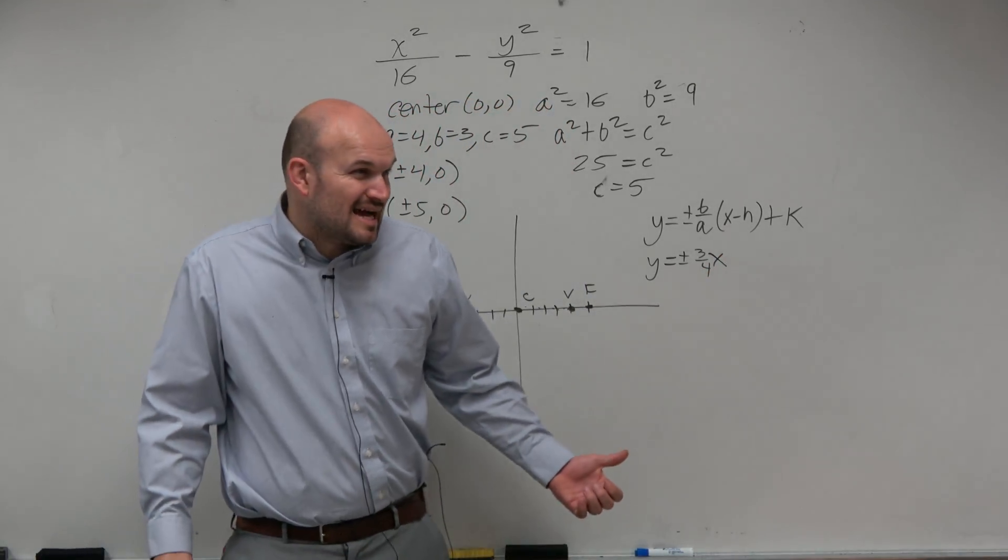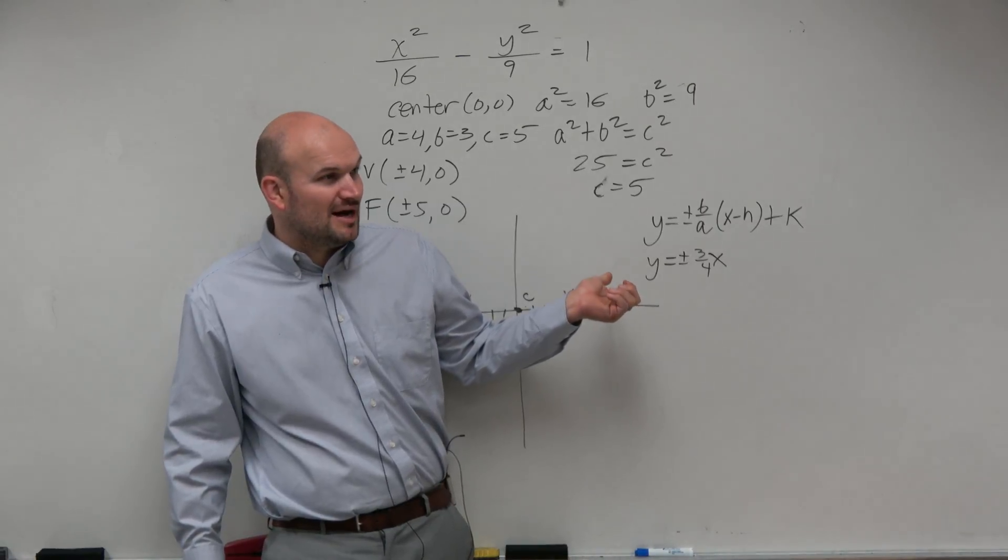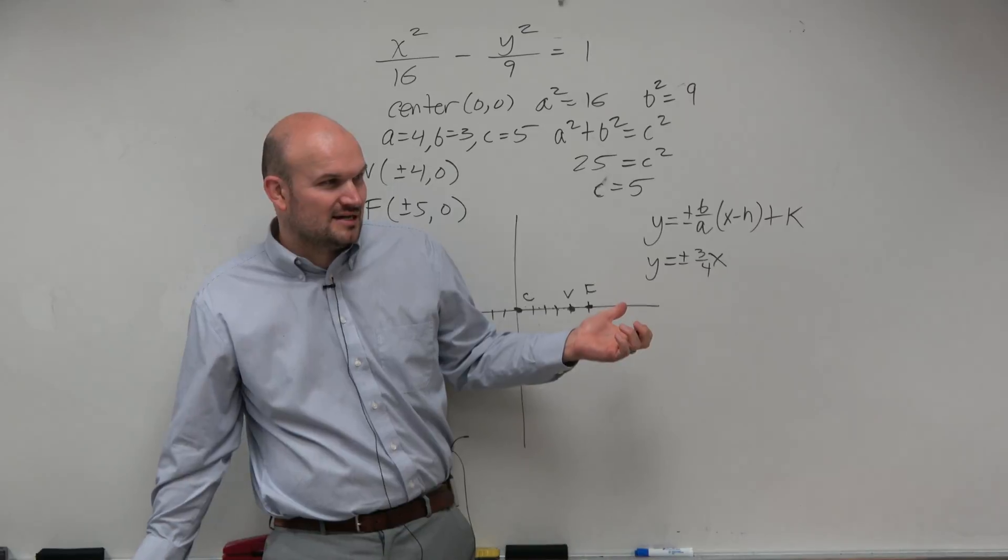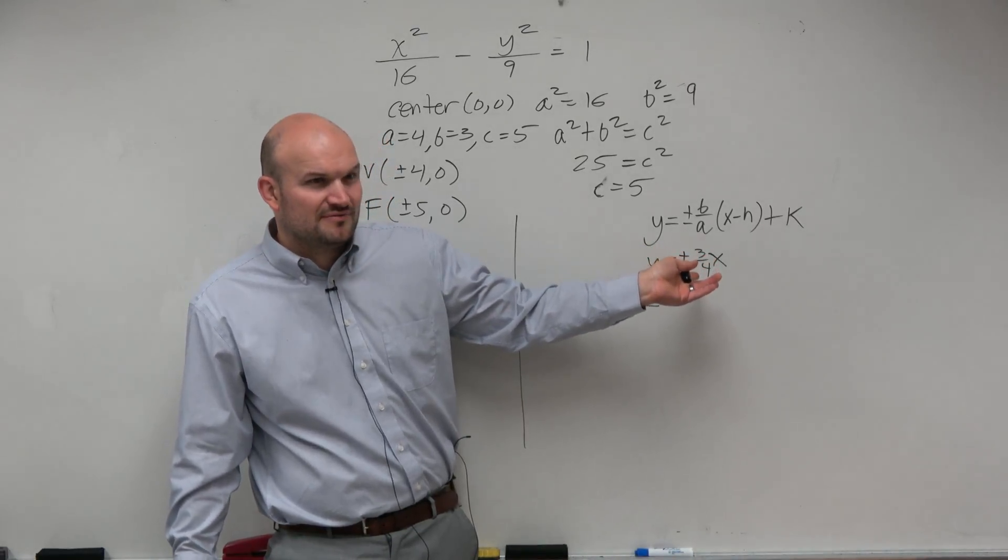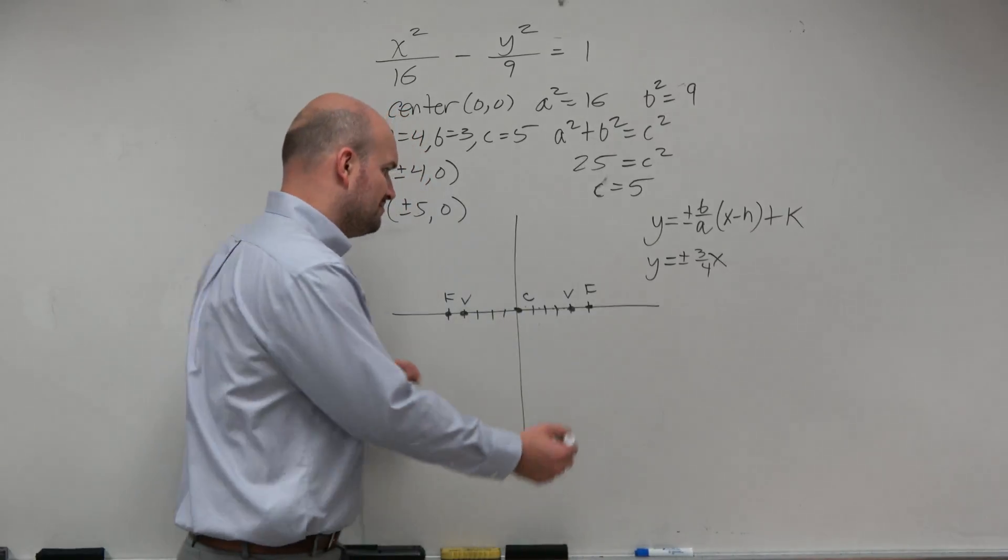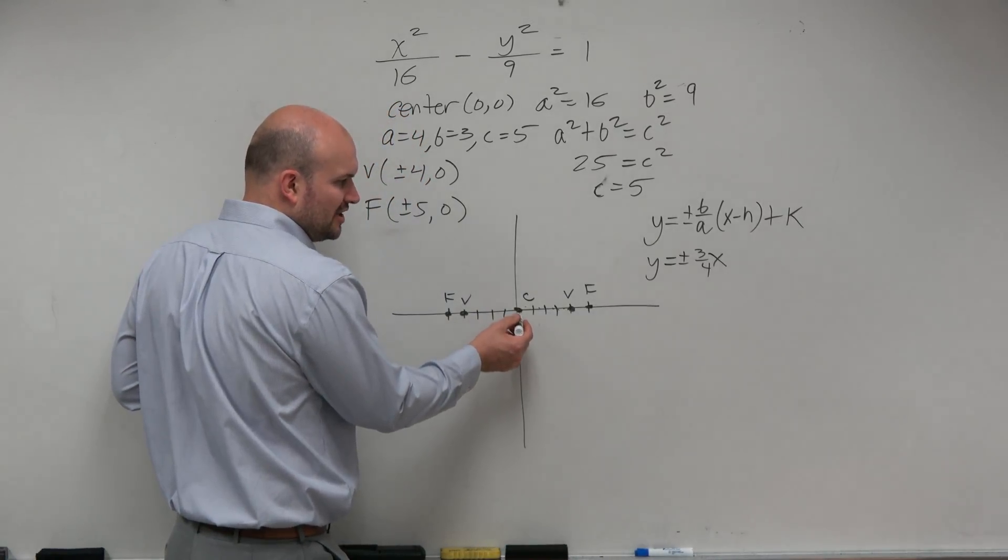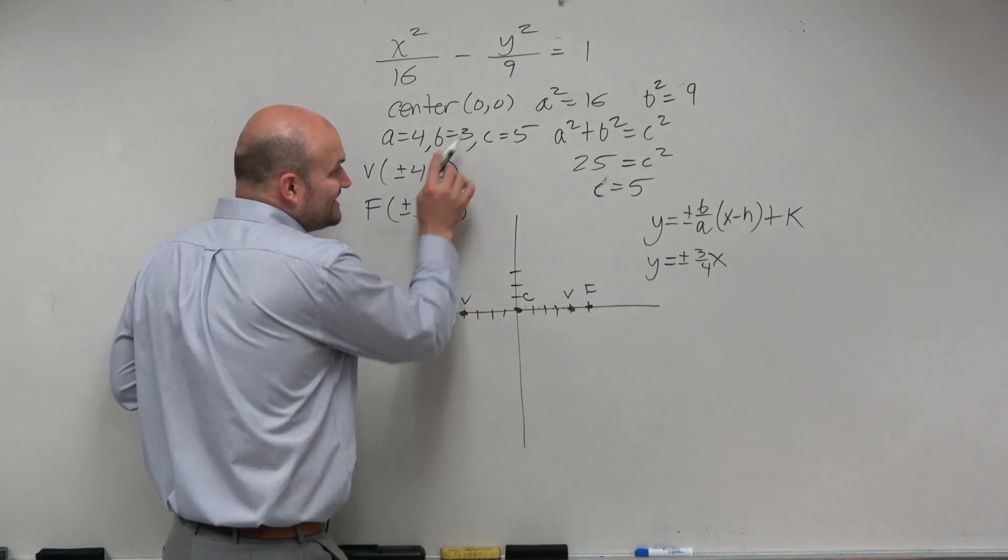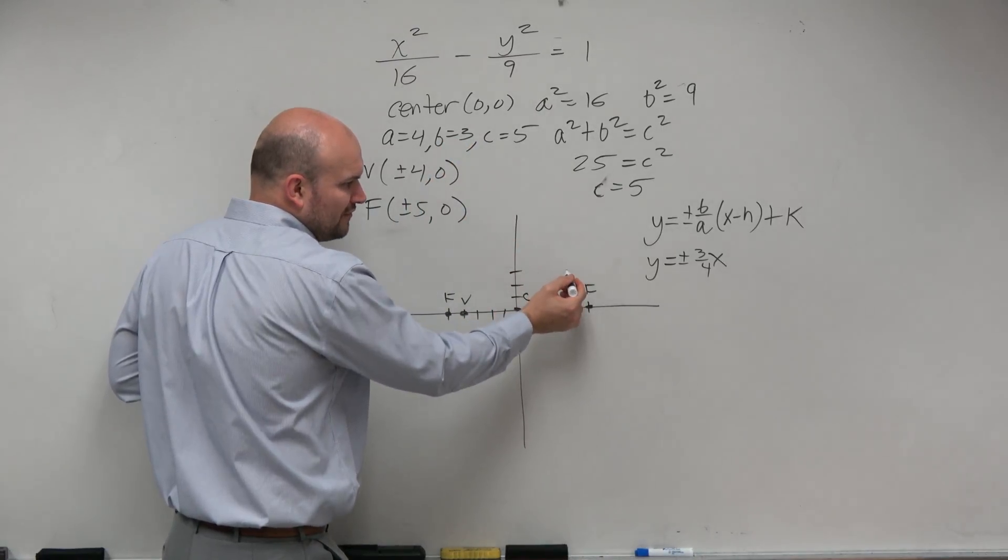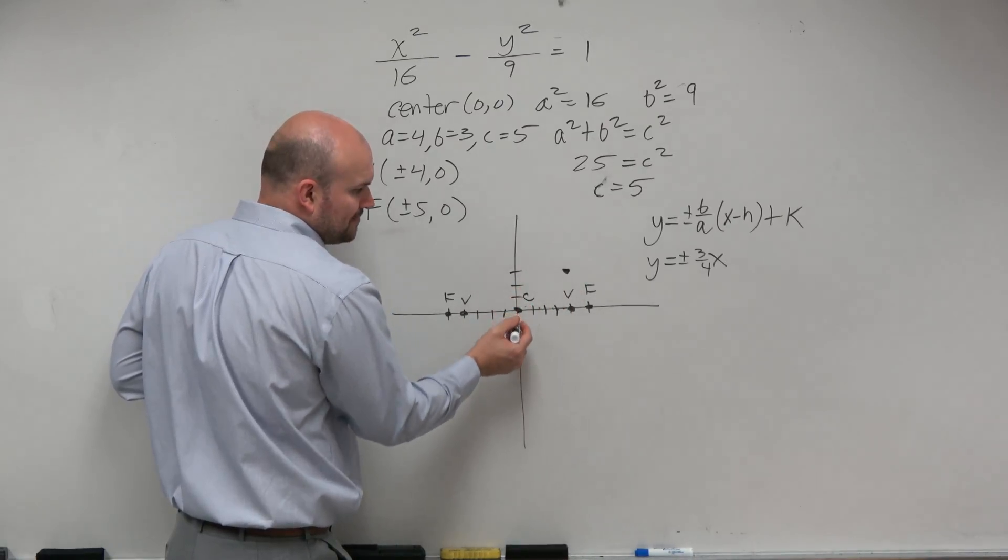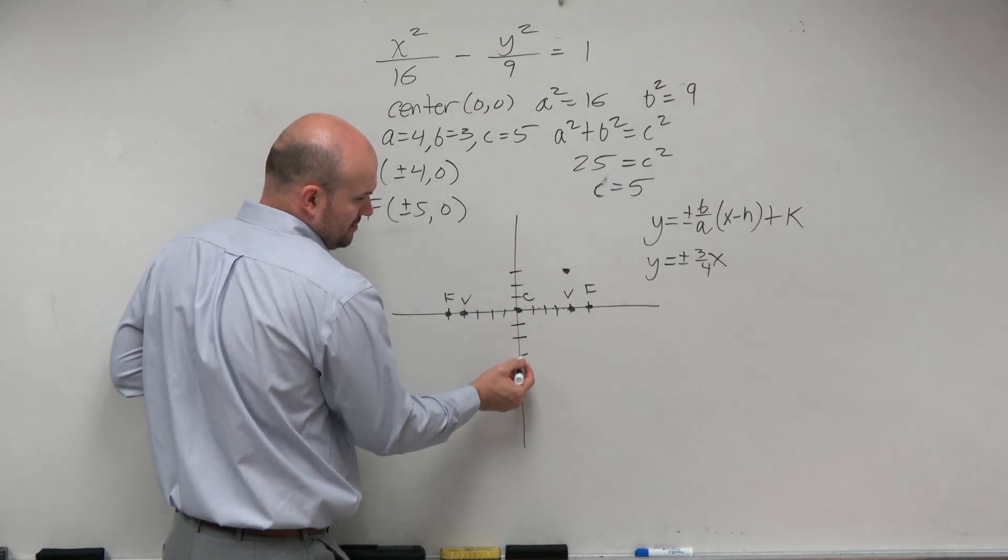So in this example, I really don't need to do the box. You could do the box. There's nothing wrong with it. But guys, can we graph 3 over 4 plus or minus 3 over 4x? I mean, it's not that hard. You're basically, your y-intercept is at 0. You go up 3, 1, 2, 3, which again is the b value, and then you're going over 4. So if you were to draw a box, that would be the corner, right? Up 3 over 4. Or you could go down 3 to the left 4.